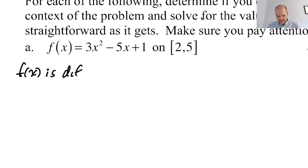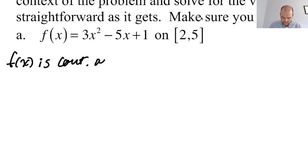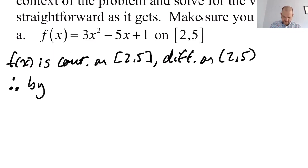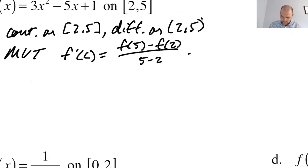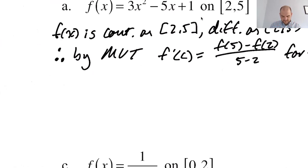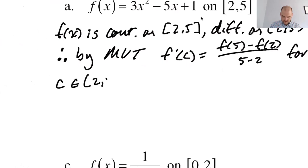So f(x) is continuous on [2,5] and differentiable on (2,5). We're not asked to prove it, we're just stating that it's true on the open interval. So therefore by MVT f prime of C equals f of 5 minus f of 2 over 5 minus 2, which equals, I'm just gonna say for some C and then I'll work that out. For some C that's an element of the open interval from 2 to 5.